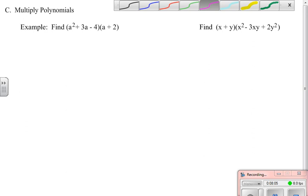Even if I have a trinomial times a binomial, nothing really changes for me. It really becomes kind of a double distributive property. So I'm going to take the first term of the binomial times each of the trinomial pieces. a cubed plus 3a squared minus 4a. And then I'm going to take the second binomial piece times each of the trinomials. Plus 2a squared plus 6a minus 8.